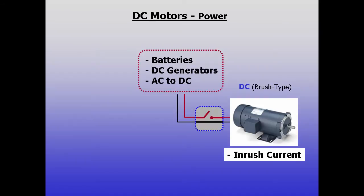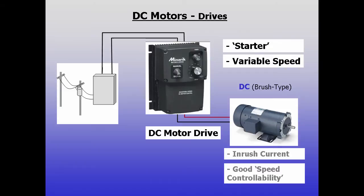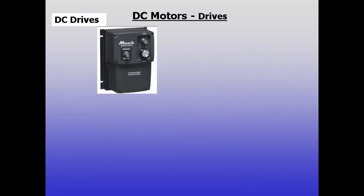DC motors also draw high amperage on startup, so the supply must be adequate and at a minimum a switch must be used that can handle the amperage. Because of their ease of controllability, DC motors are usually used with motor drives. DC drives can act as a starting switch and also provide variable speed of the motor.